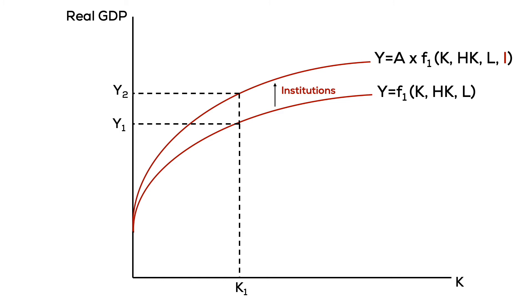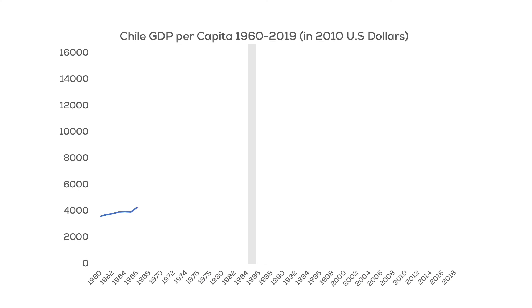A good example of this is Chile. From 1900 to 1985, Chile grew at a rate of less than 1%. In 1975, Chile began drastic economic reforms. From 1985 to 2016, growth averaged 3.7%. These economic reforms unleashed a new economic environment, allowing people to take the same resources but use them more productively. That's why we look at institutions as a way to create endogenous economic growth.